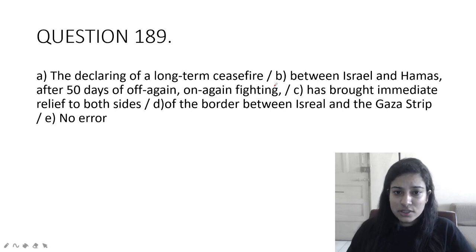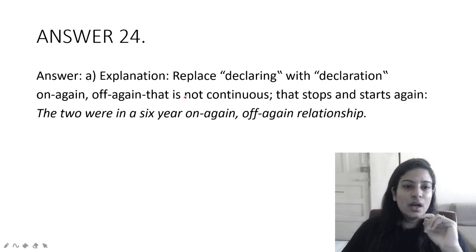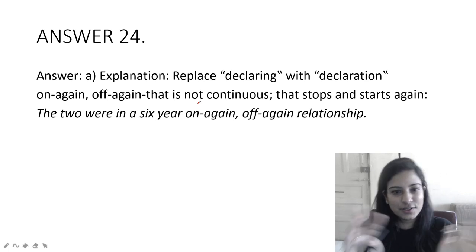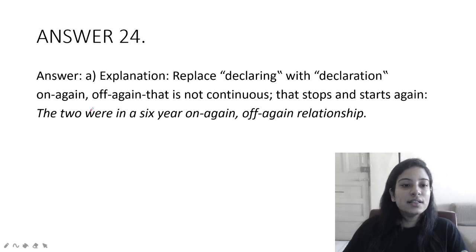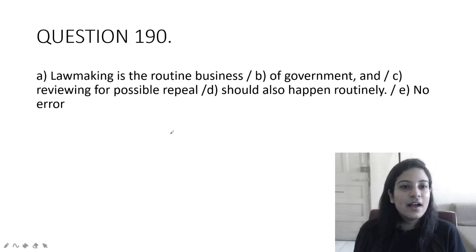The declaring of a long-term ceasefire between Israel and Hamas after 50 days of off-again on-again fighting has brought immediate relief to both sides of the border between Israel and the Gaza Strip. Declaring should not be here, it should be declaration, you have to give a noun here. Off-again on-again is a great phrase here. This means something which is not continuous, which is stop and start, start and stop. So the two were in a six-year on-again off-again relationship. It means that you start and stop.